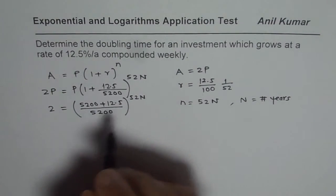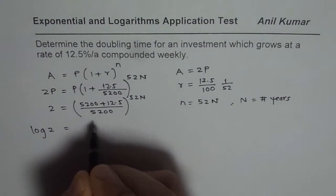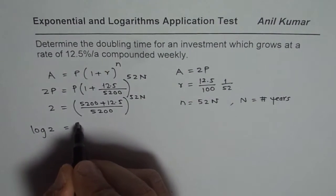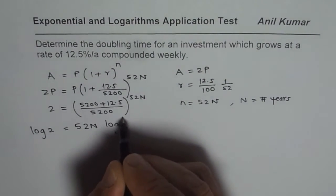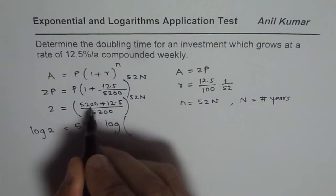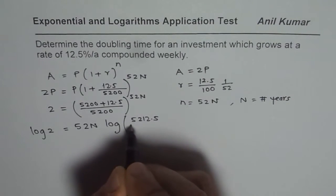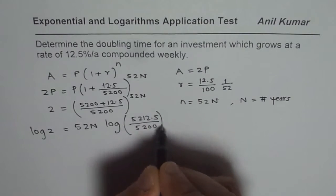Let us take log both sides. When we take log, we get log of 2 equals to... When I take log, we are applying the power rule also simultaneously, so this becomes 52n log of all this. We can add it now, it is 5212.5 divided by 5200.